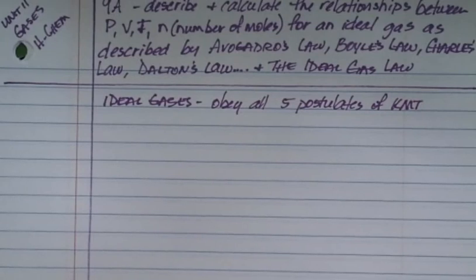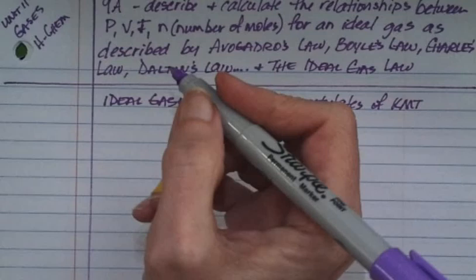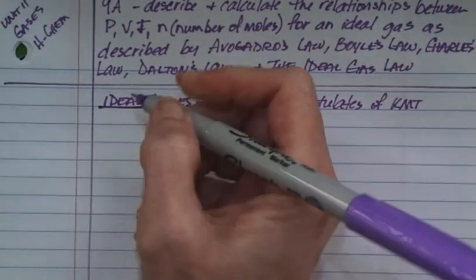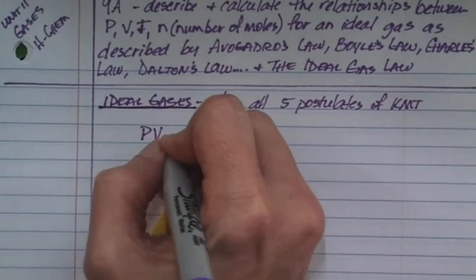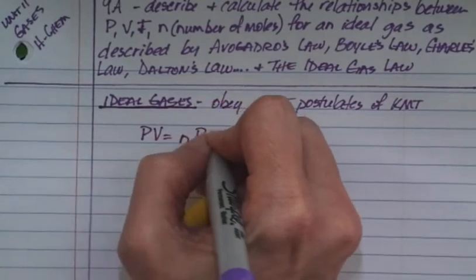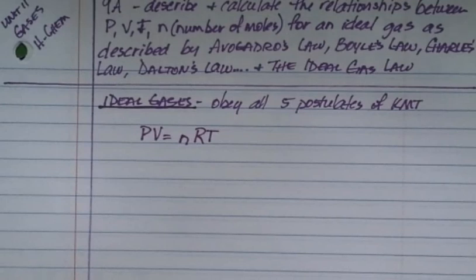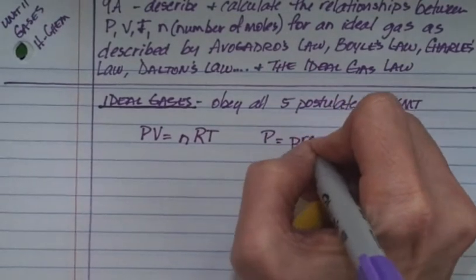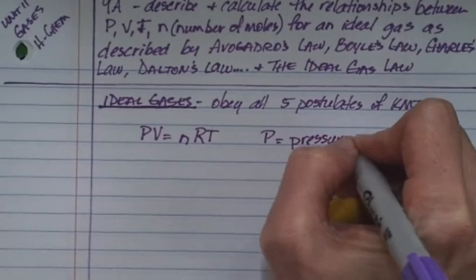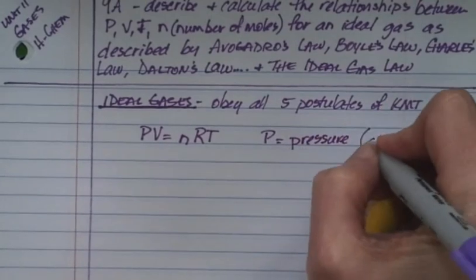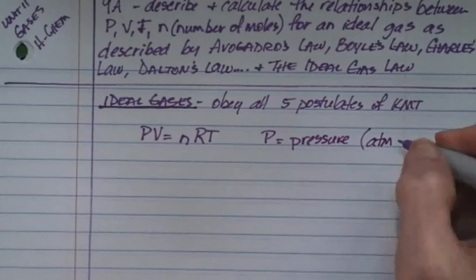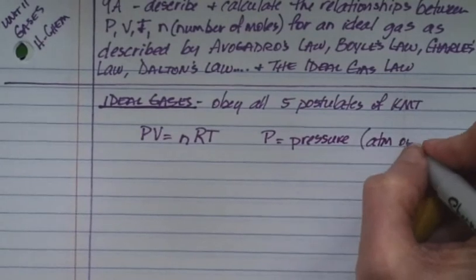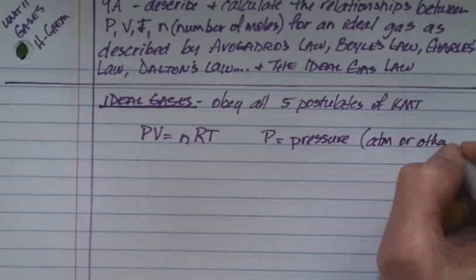When we talk about the ideal gas law, we are talking about gases that are obviously gases — they're not on the border or on the line between that gas and turning back into a liquid.